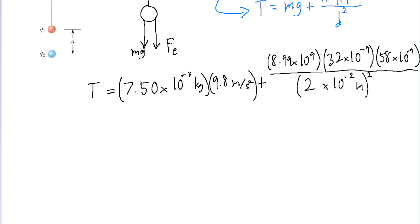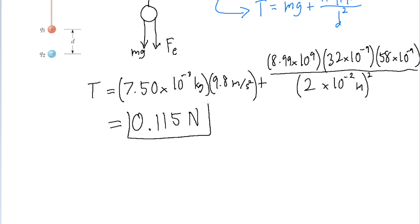If we put all of this into a calculator, then we find the tension to be 0.115 newtons. And that is the tension of the string.